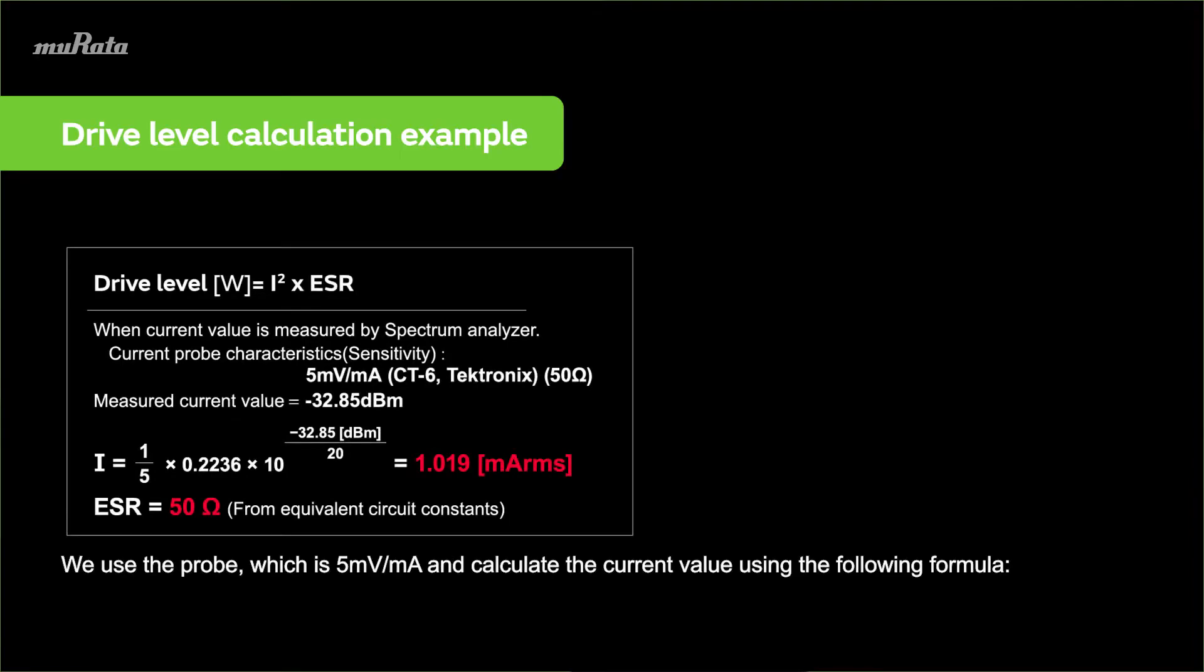We use the probe, which is 5 millivolts per milliamp, and calculate the current value using the following formula. When we measured the current level, minus 32.85 dBm, with the spectrum analyzer, the current value is 1.019 mA.